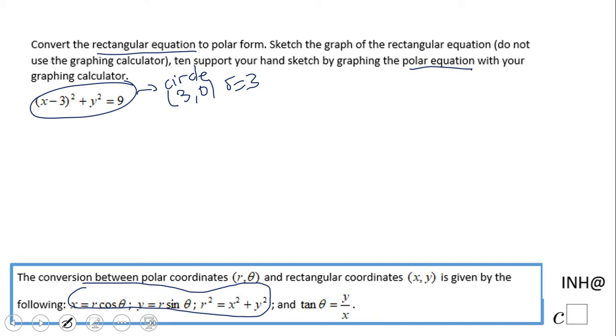So first of all, what I'm gonna do here is raise to the second power x minus 3, and that will be x² minus 6x plus 9. If you don't see that, do (x - 3) times (x - 3) and you'll see you get this expression plus y² equals 9.